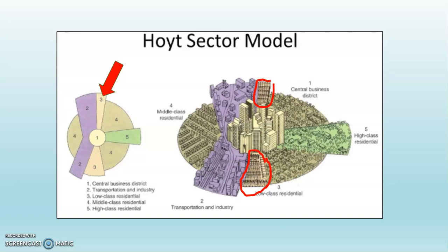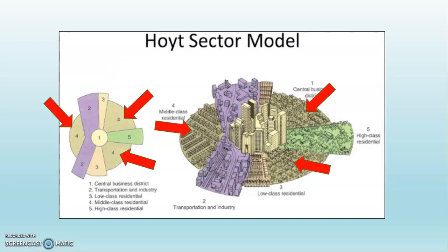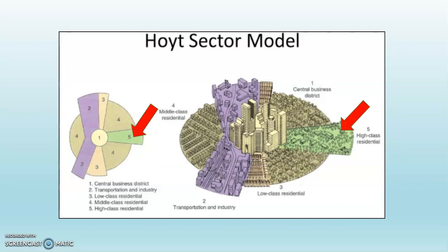And of course, this would also represent a concentration of people of color and first-generation immigrants. After that, we have the middle-class residential neighborhoods, which make up a fairly substantial part of the city, followed by the high-class residential neighborhoods — and remember, these are terms that he used, not my terms.